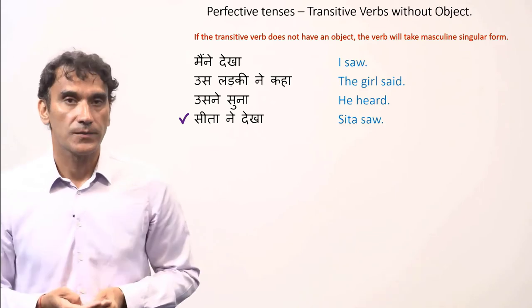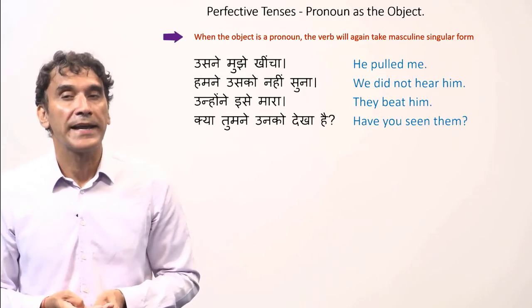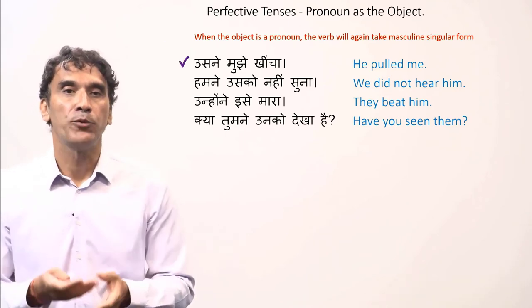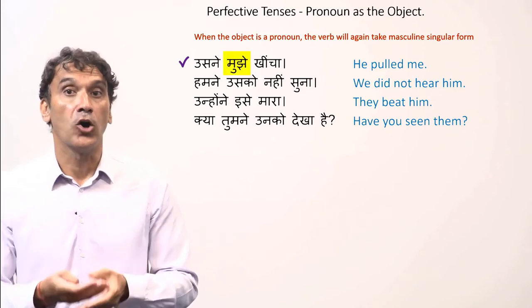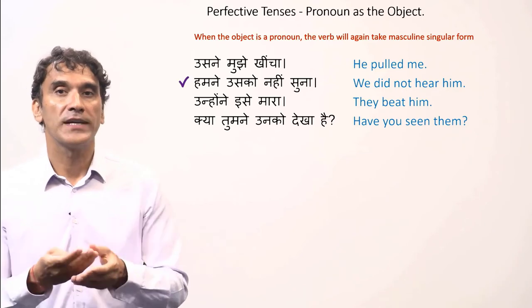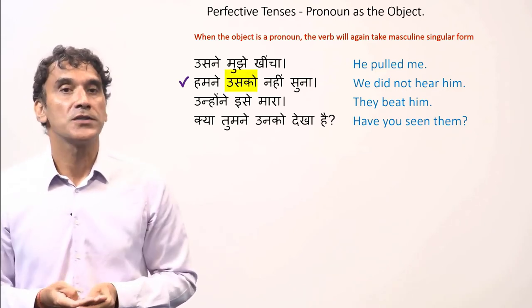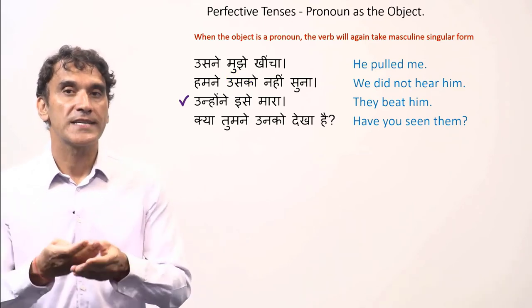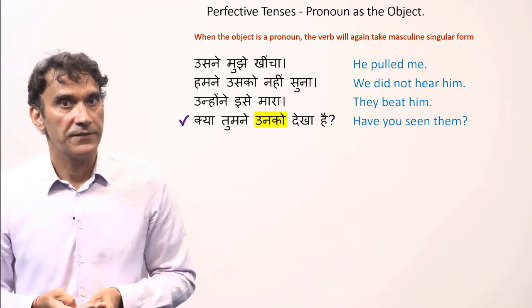When the object is a pronoun, the verb will again take the masculine singular form. 'Usne mujhe khincha' — he pulled me. The verb is in masculine singular form because the object is a pronoun 'mujhe'. 'Humne usko nahi suna' — we did not hear him. Again masculine form because the object is a pronoun 'usko'. 'Unhone isse maara' — they beat him. 'Kya tumne unko dekha hai?' — have you seen them?